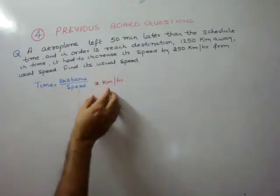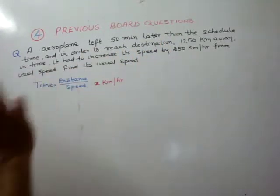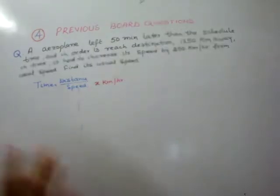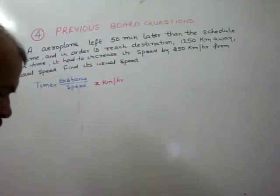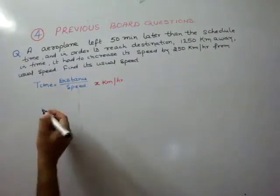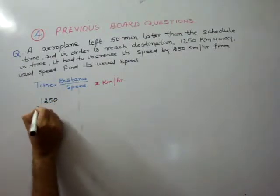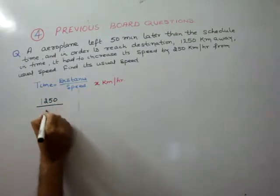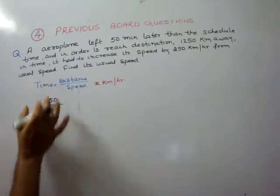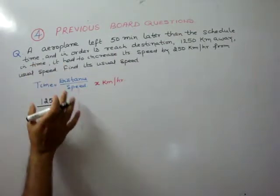When it is travelling at original speed, covering the same distance, it is taking some time. So we write: 1250 by x is its usual time.